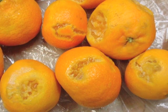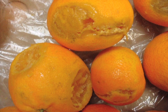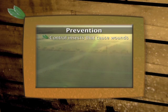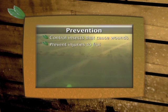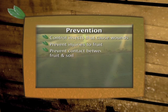Sour rot develops most quickly at temperatures above 27 degrees Celsius. It spreads in packed cartons from infected fruit to healthy fruit, and its development is stimulated by the presence of green mould spores. To prevent infection, pest control is very important. Good picking practices must be employed, so that injuries to fruit, such as those caused by snap picking, are avoided, and fruit is not packed when it has been in contact with the soil.